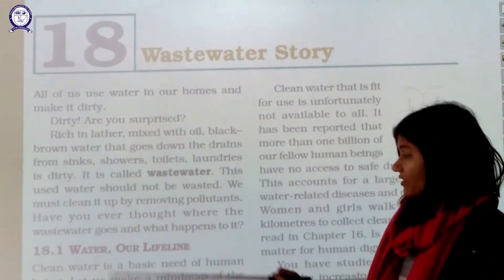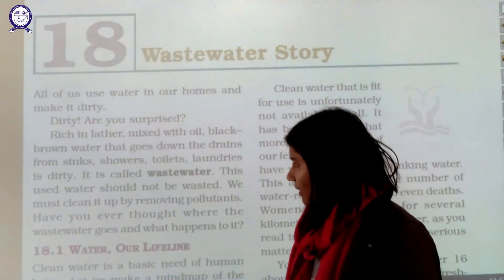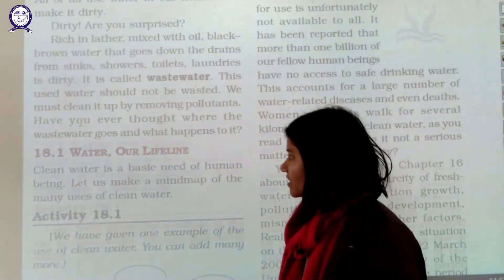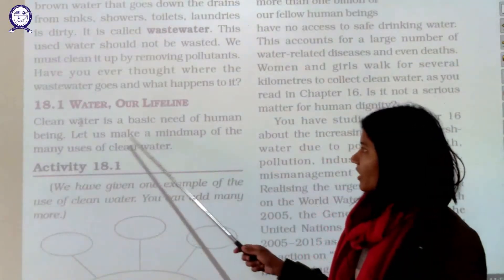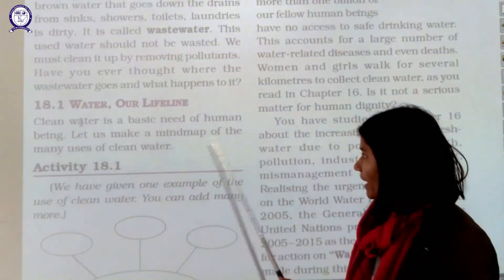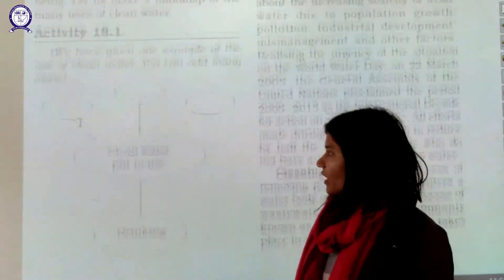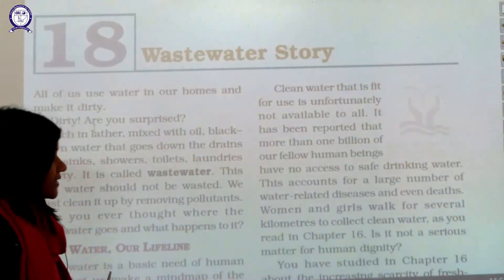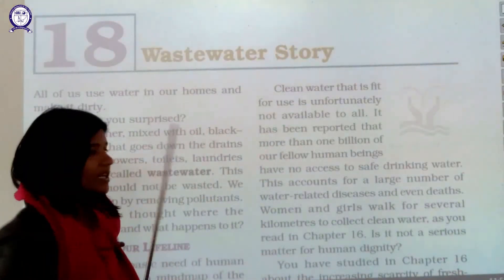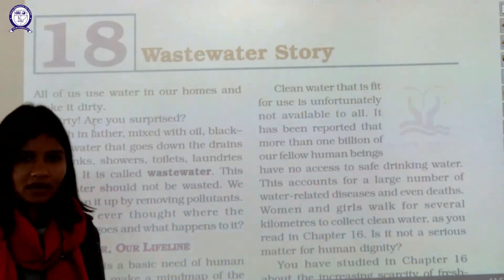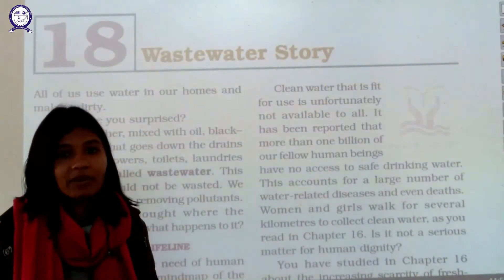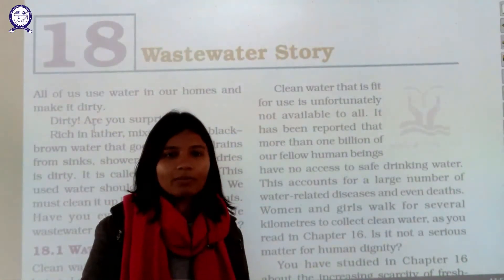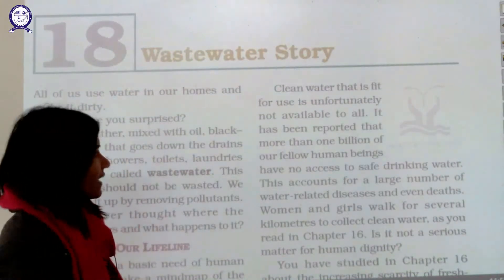Have you ever thought where waste water goes and what happens to it? In this chapter we are going to learn about that. Water is our lifeline — we have discussed this in chapter 16 also. Clean water is a basic need for human beings. Now, clean water that is fit for use is unfortunately not available to all of us. Our planet Earth is 70 percent water, yet only about 1 percent of that is usable, which is why we need to conserve water.